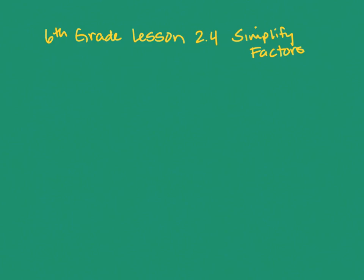Let me show you the two ways the book talks about. One way is simplifying the fraction by just reducing the product, which we've already looked at. The other way is a trick we can do that helps us reduce down the fractions before we even multiply them. So the first way: once you get an answer, you have to simplify or reduce the product — whatever problem we've done in fraction form, we always reduce it to its simplest form.